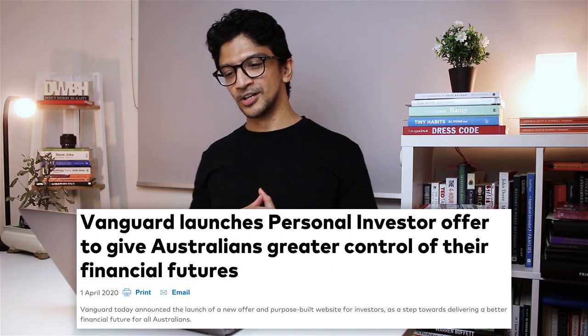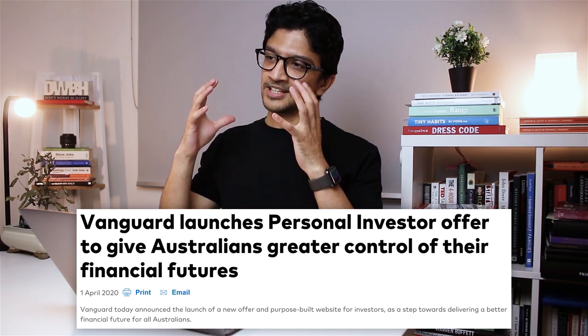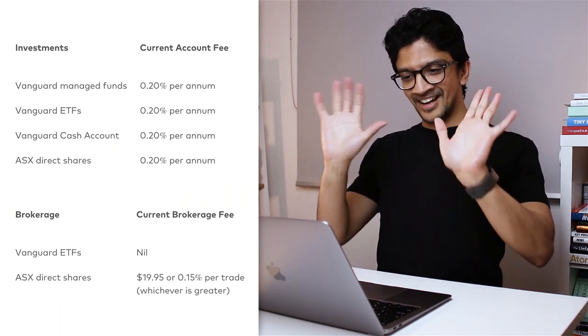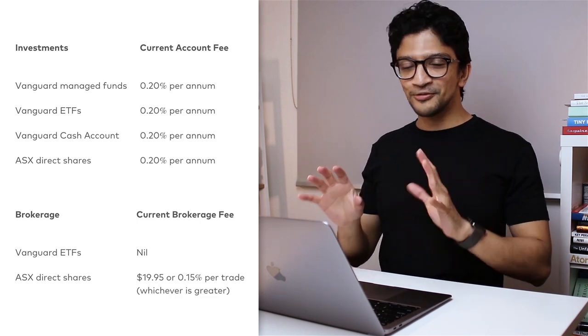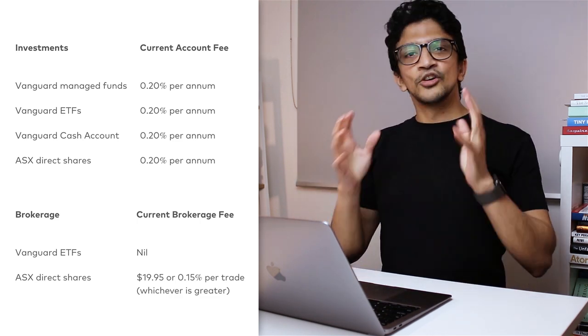The Vanguard personal investor account started back in April of 2020 and launched to quite a lot of fanfare, especially in the Instagram personal finance community. A lot of people were excited because it's a Vanguard product — everyone loves Vanguard products. I like Vanguard ETFs: VAS, VGS, VGE, VAE — they're all great products. VDHG is heavily liked too. But when you actually looked at the product, it was shocking.